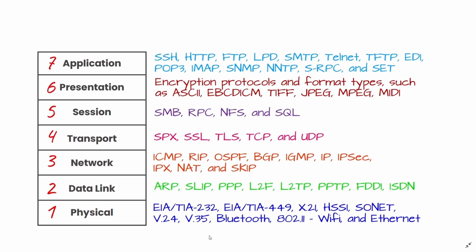The fourth layer of the OSI model is the transport layer. The transport layer manages the delivery and error checking of data packets. It regulates the size, sequencing, and ultimately the transfer of data between systems and hosts. One of the most common examples of the transport layer is TCP, or the Transmission Control Protocol.